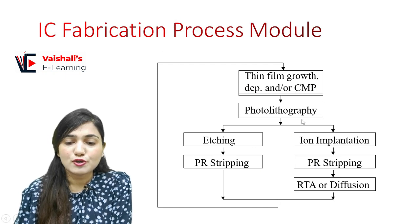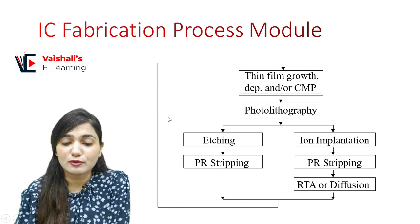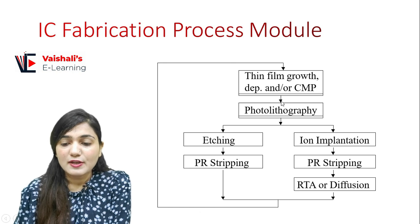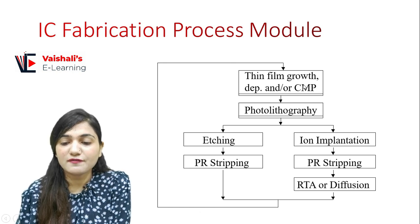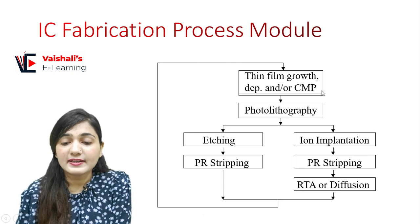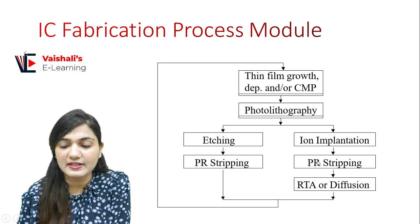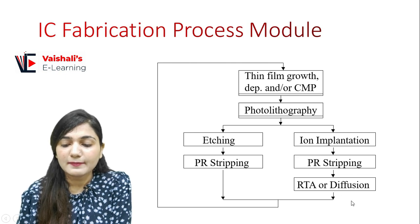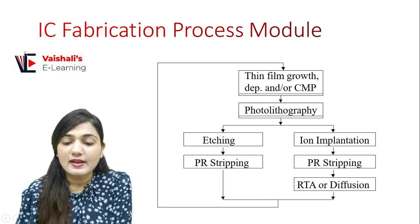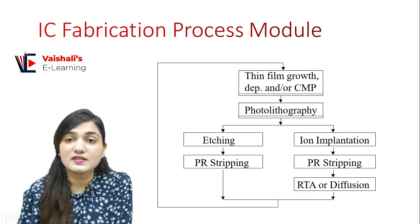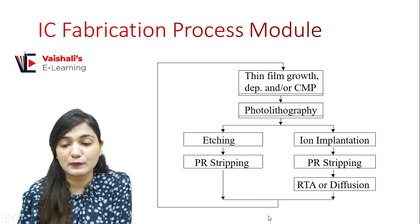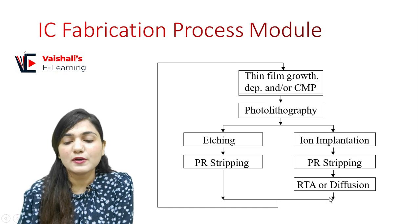The IC Fabrication Process Module includes: thin film growth, deposition, chemical mechanical polishing, photolithography, etching, PR stripping, ion implantation, PR stripping again, rapid thermal annealing, and diffusion. All these processes require clean rooms.